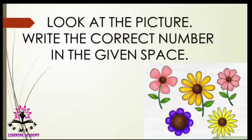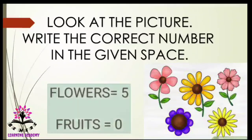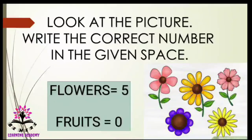What do you find in the image? You find flowers. How many flowers are there? There are five flowers — different colorful flowers. There are five flowers, so flowers is equal to five. What about fruits? There are no fruits in the image, so the number of fruits is zero.